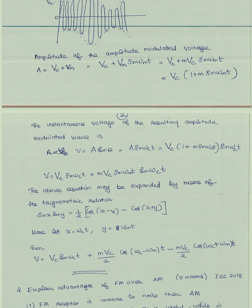This becomes v = Vc [1 + m sin(ωm·t)] sin(ωc·t). Expanding: v = Vc sin(ωc·t) + (m·Vc/2) sin(ωm·t) sin(ωc·t). Using the product-to-sum identity, this gives v = Vc sin(ωc·t) − (m·Vc/2) cos[(ωc + ωm)t] + (m·Vc/2) cos[(ωc − ωm)t].